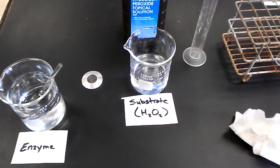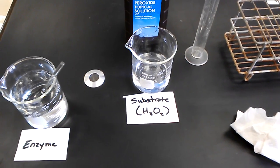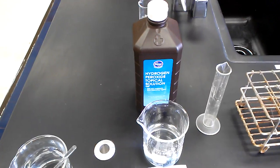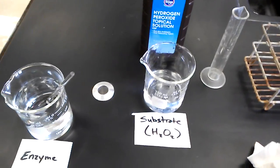In the beaker centered is hydrogen peroxide, which is the substrate for this chemical reaction. It's the same hydrogen peroxide you can buy at the grocery store. This is 3% hydrogen peroxide.